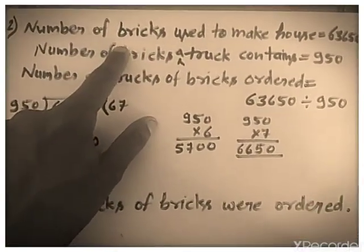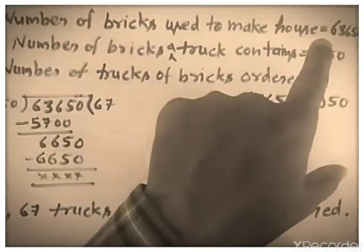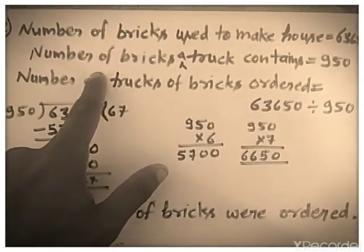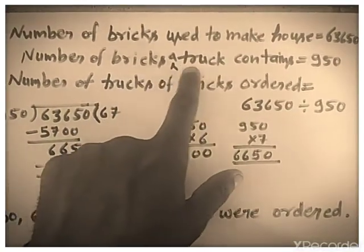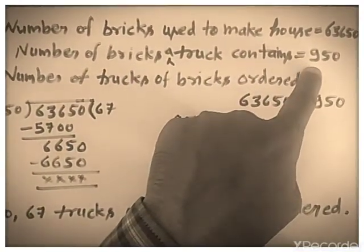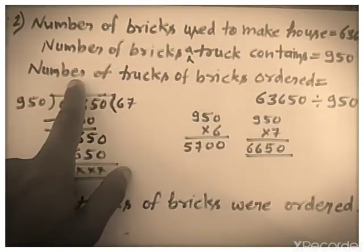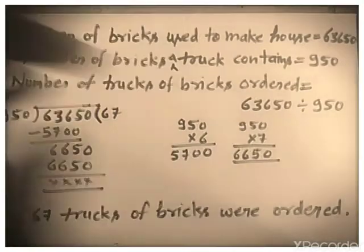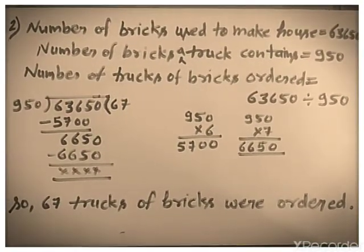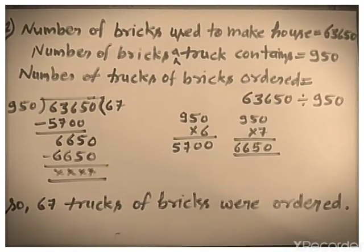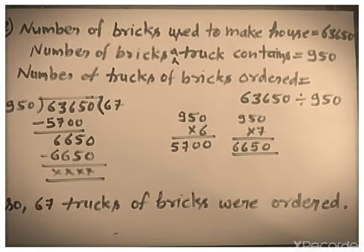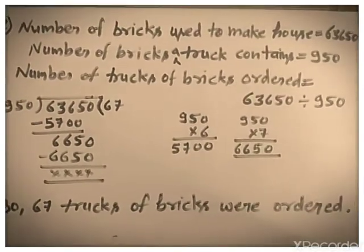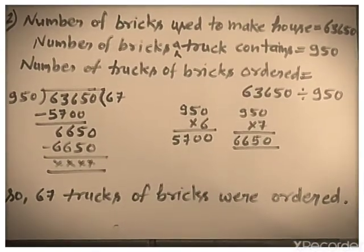See the solution. Number of bricks used to make the house is 63,650, and number of bricks in a truck is 950. Number of trucks ordered: when we divide the total number of bricks by the number of bricks in a truck, we get the number of trucks. So divide 63,650 by 950.